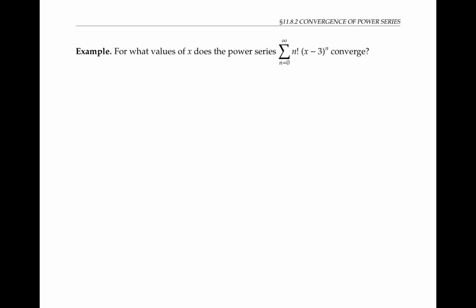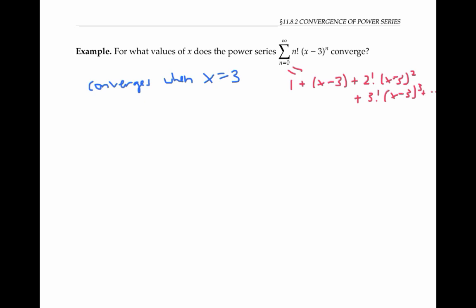Let's look at a few examples. First, for what values of x does this power series converge? There's one value of x that I know for sure it converges for. The series definitely converges when x equals three. If I expand out the first few terms of the series, I get this expression, then plugging in three for x, all of my terms vanish to zero except for my constant term of one. So at x equals three, the series converges to its constant term. In fact, this is true of any power series — all power series converge at their center.